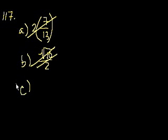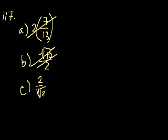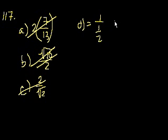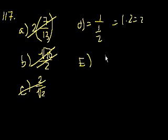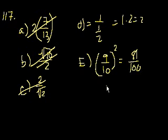Choice C is 2 over the square root of 2. The square root of 2 is less than 2 — it's 1 point something — so this is also going to have a value greater than 1. Choice D says 1 divided by one-half, which equals 1 times 2, equaling 2. So the choice is going to be E. They have 9 over 10 squared, which is 81 over 100, and that is definitely less than 1. So the choice is E.